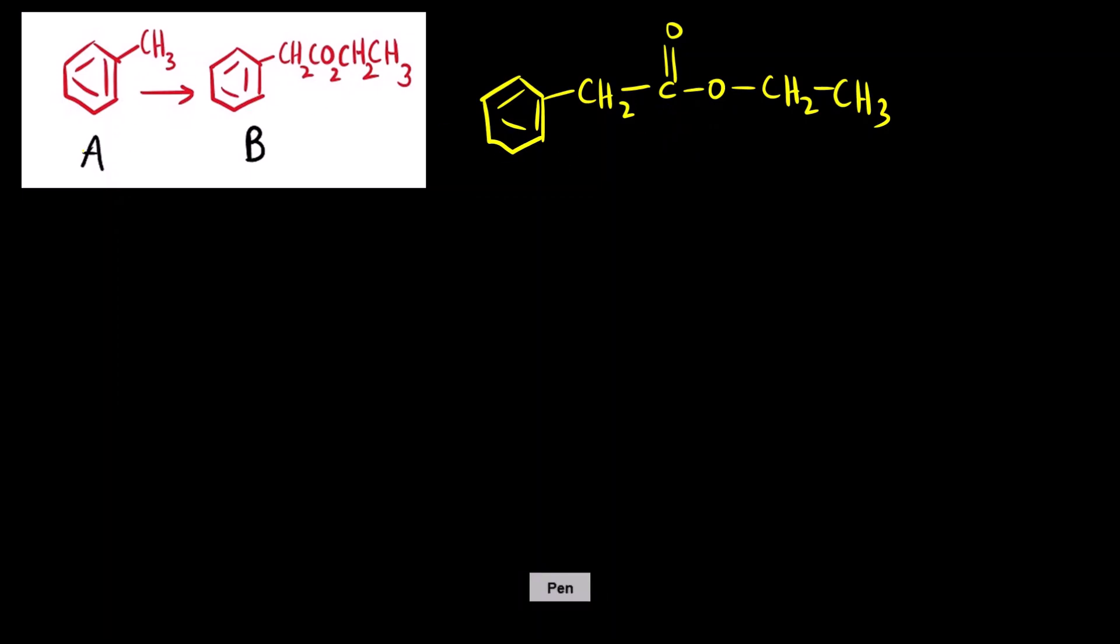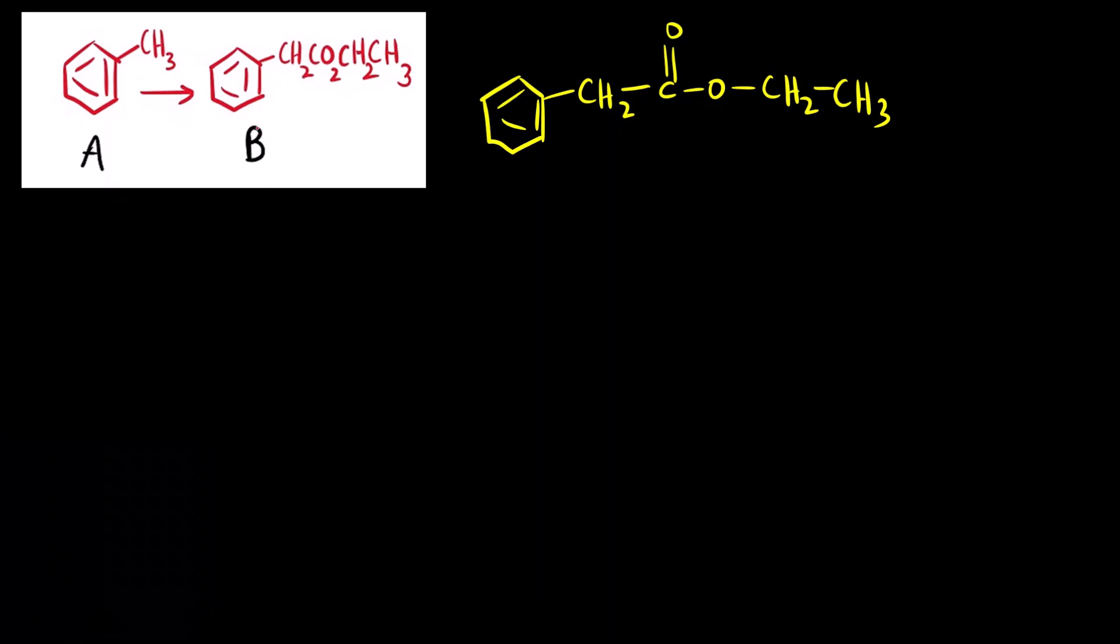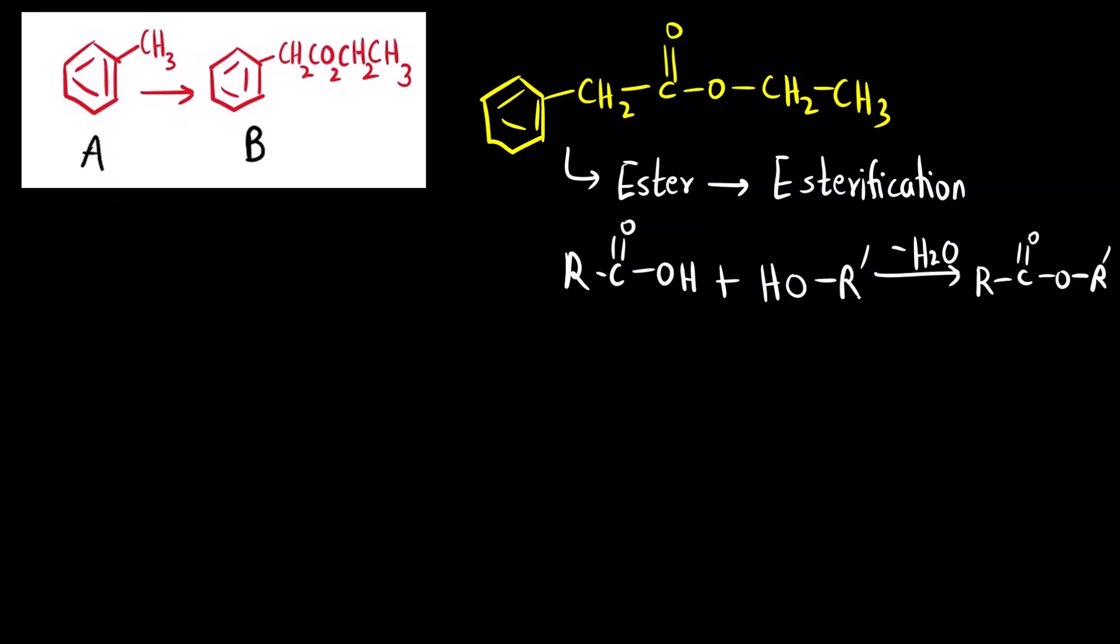If you start thinking directly like if you look at the reactant A and then you think of some direct method to convert it into B, it is going to be very difficult. That is why we work backward. We take the product and now you think this is which functional group? Ester. The most common reaction for the formation of ester is esterification.